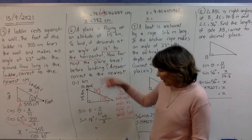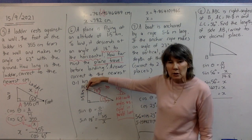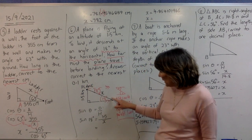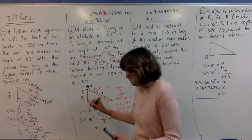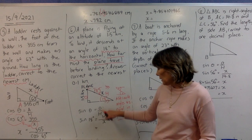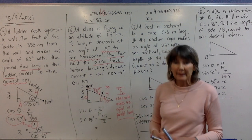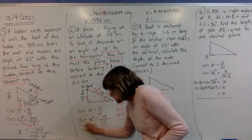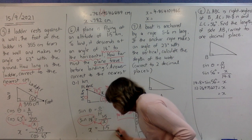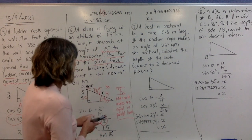We're finding how far the plane must travel before landing — that's the hypotenuse of the triangle. Using opposite and hypotenuse, we use sine. Sin θ = O/H, so sin 18° = 1.5/x. With x on the bottom, we swap: x = 1.5 ÷ sin 18°. Put that into the fraction key on your calculator.